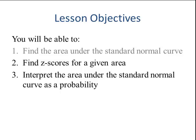Lesson objectives. In the previous video we learned how to find the area under the standard normal curve. In this video we will find the z-scores for a given area and interpret the area under the standard normal curve as a probability.